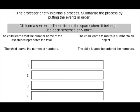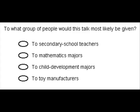The professor briefly explains a process. Summarize the process by putting the events in order. To what group of people would this talk most likely be given?